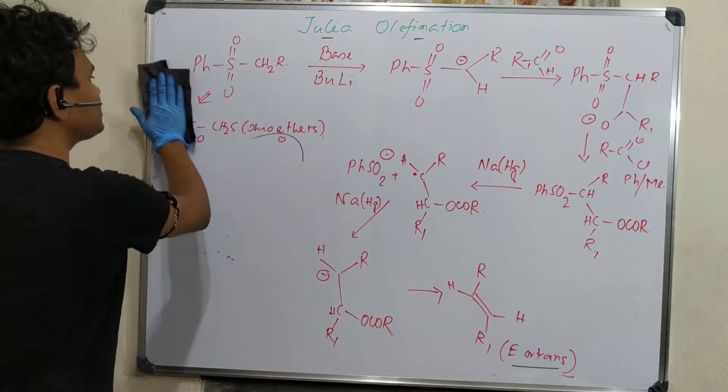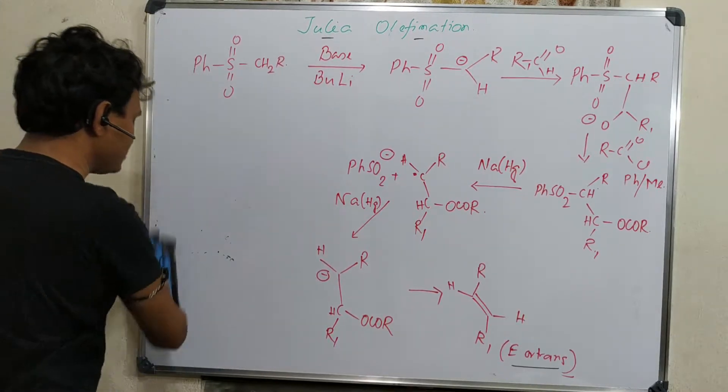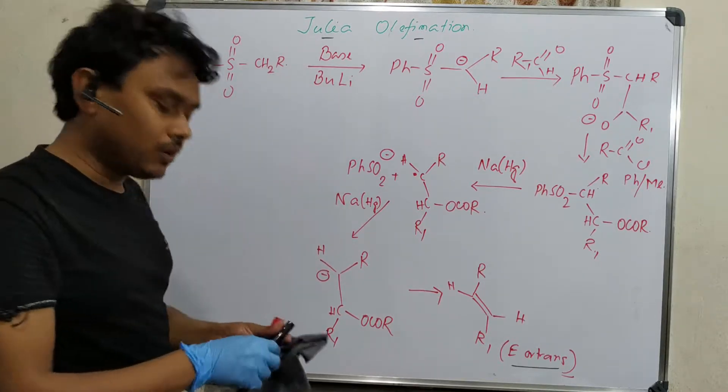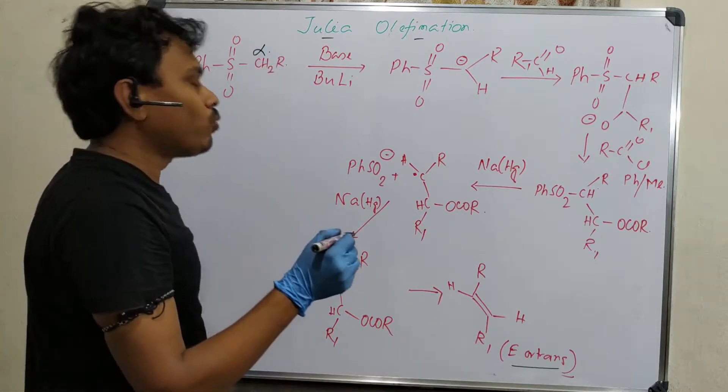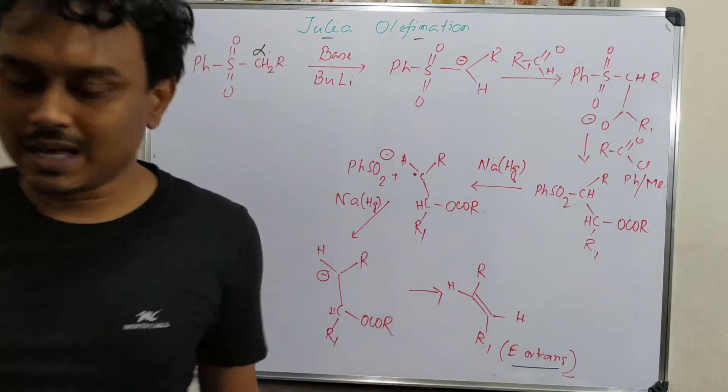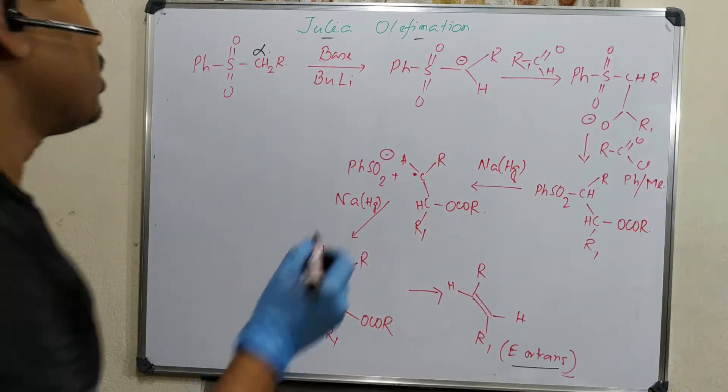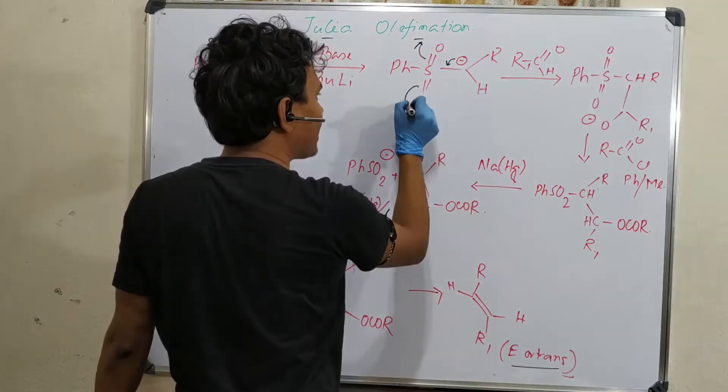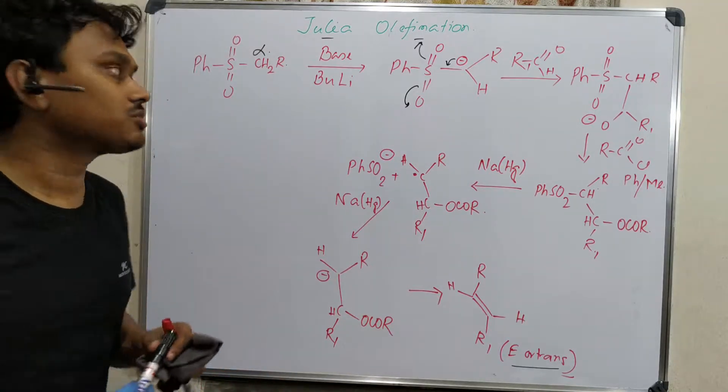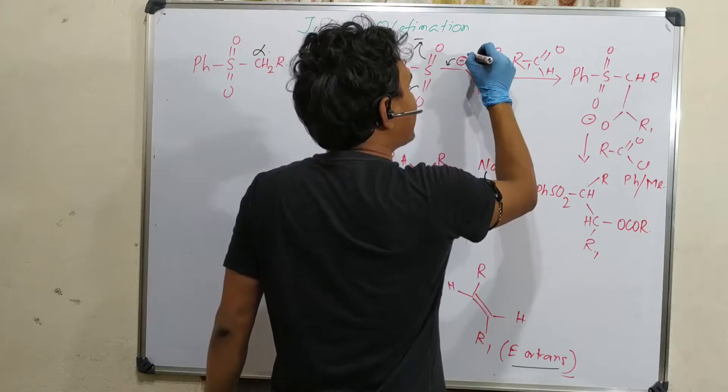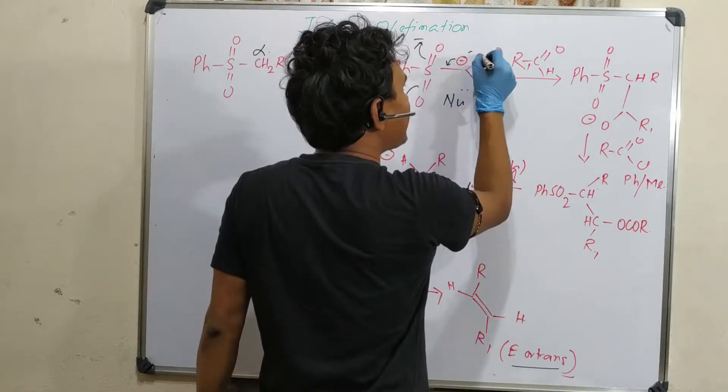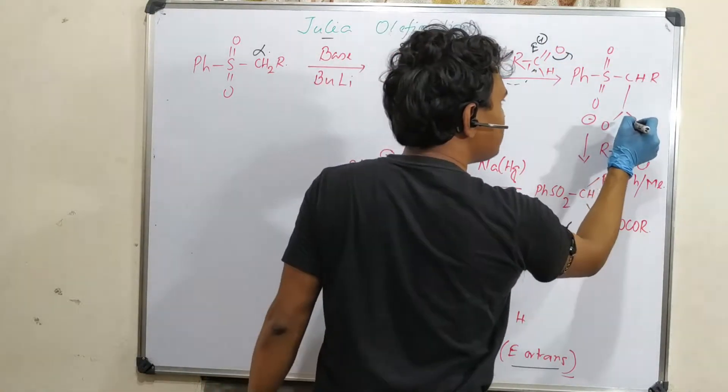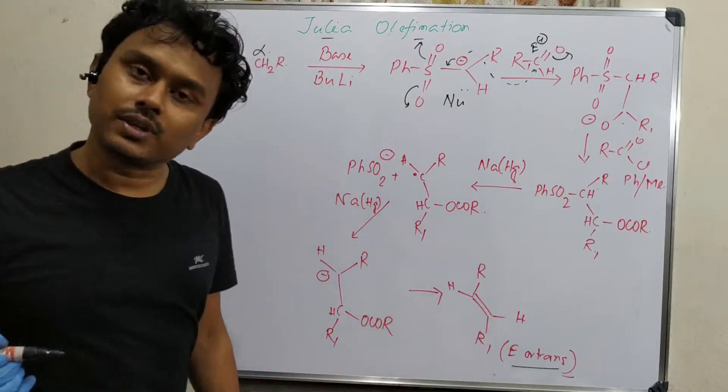This is utilized in Julia olefination and the anion is generated in presence of a strong base like butyl lithium. This alpha proton is abstracted because this carbanion is resonance stabilized with conjugation of the sulfur-oxygen bond. Two conjugation structures are possible. This carbanion acts as a nucleophile and attacks the carbonyl carbon which is an electrophile, producing beta-hydroxy sulfonyl compound.